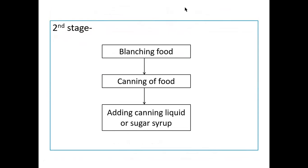Blanching of food means the sliced and raw food materials are heated for five to ten minutes in boiling water or steam flow. This process of heating of the food materials is called blanching.